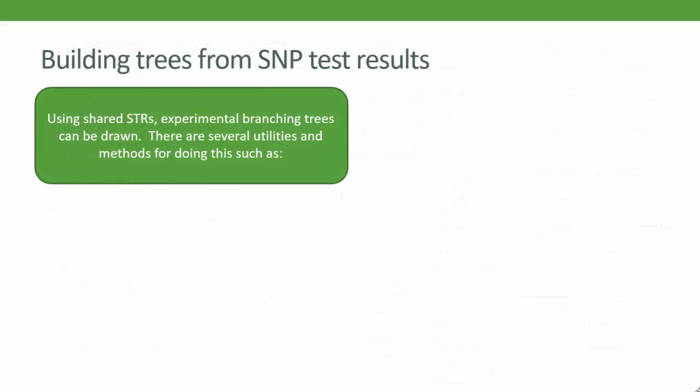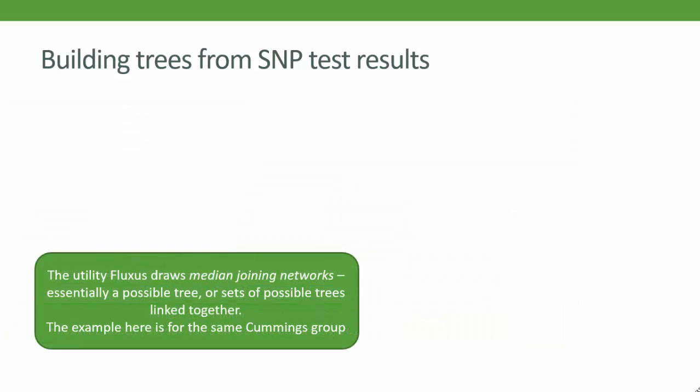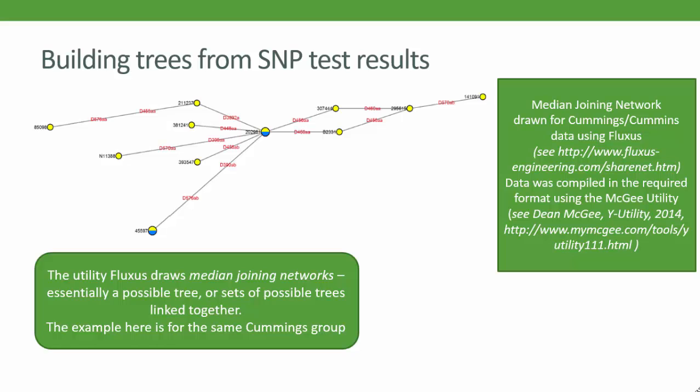STRs do give us some tree-building options, and there are utilities and methods for drawing them. Here is one representation of the Cummings lineage using Robert Barber's system for drawing an STR branching tree. This is a useful exercise as it helps pick out those STRs that can be useful branch markers. Many project admins will also be familiar with Fluxus software, which generates networks — like networks of mini trees from your STR matrix. This is a Fluxus network for the same Cummings data, 67-marker data only, prepared using Dean McGee's utility for analysing STR marker sets. It looks very different to the previous Barber tree, but it does also pick out STRs that might sit at the branching nodes of a tree. But it is a network, not a tree.